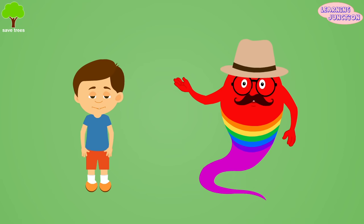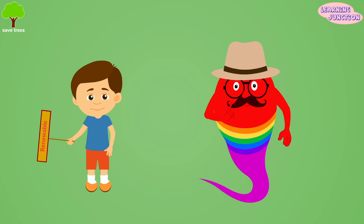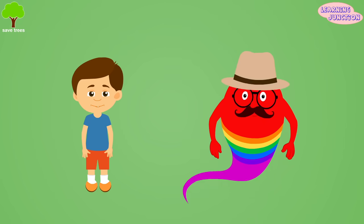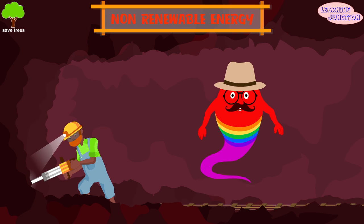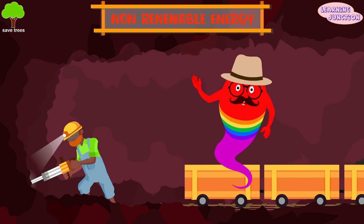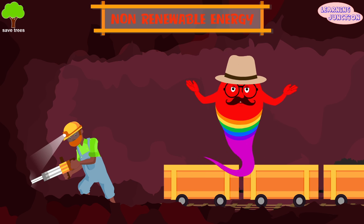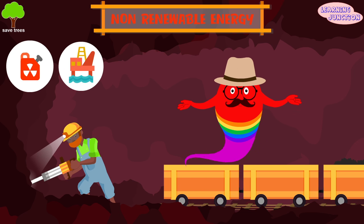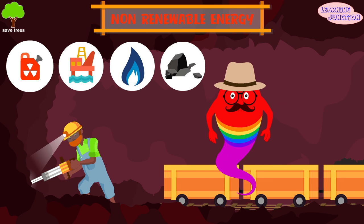Conservationists classify energy into two types: renewable and non-renewable. Non-renewable are those energy sources which cannot renew themselves, or take millions of years for their formation. These include nuclear fuels, petroleum, natural gas, coal, etc.